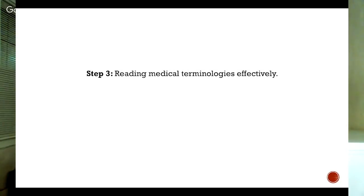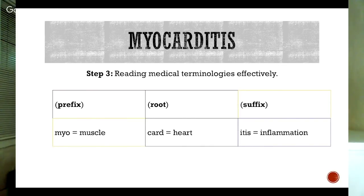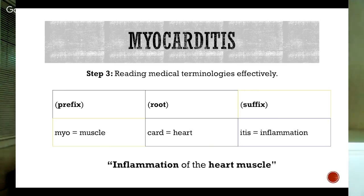This leads us to step three: reading medical terminologies effectively. Let's take myocarditis again. When reading a medical term, I have found it very effective to read right to left to obtain the word's meaning. If we take that approach for myocarditis, the meaning becomes inflammation of the heart muscle, versus muscle heart inflammation.